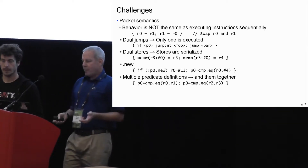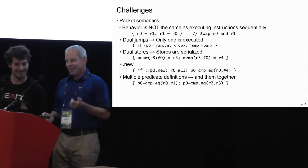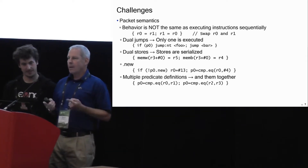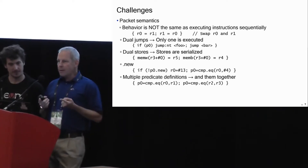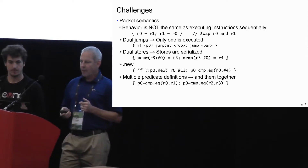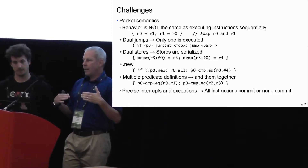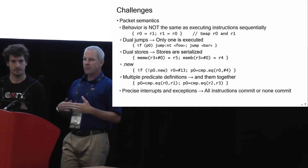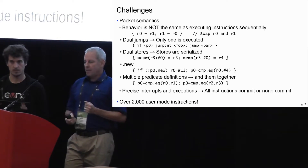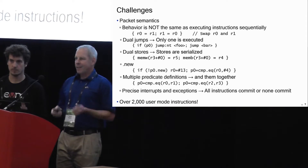You can have multiple predicate definitions in a packet. For example, two writes to P0 in the same packet — the semantics are that they get ANDed together. And there are precise interrupts and exceptions: when you have a packet, either all instructions commit or none of them commit. Last but not least, there are over 2,000 user mode instructions — that's a lot.